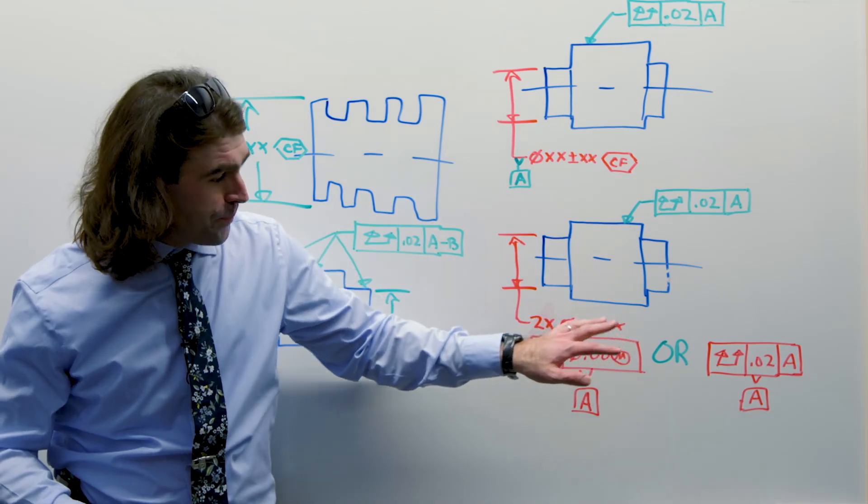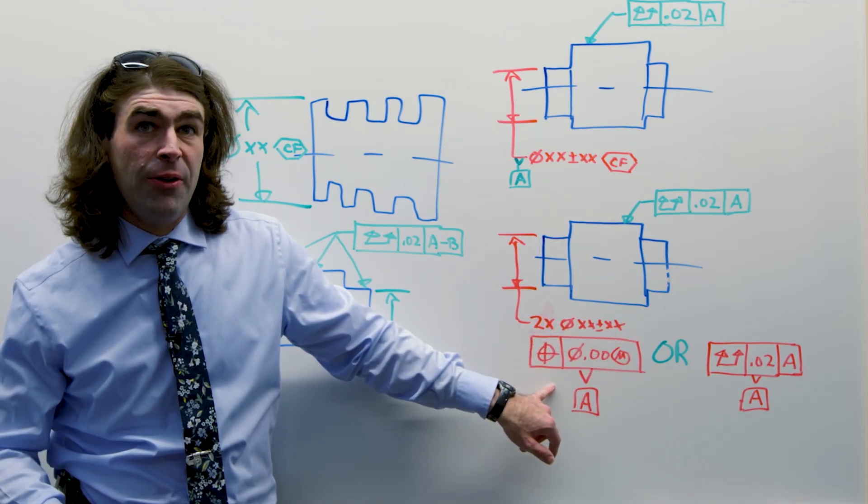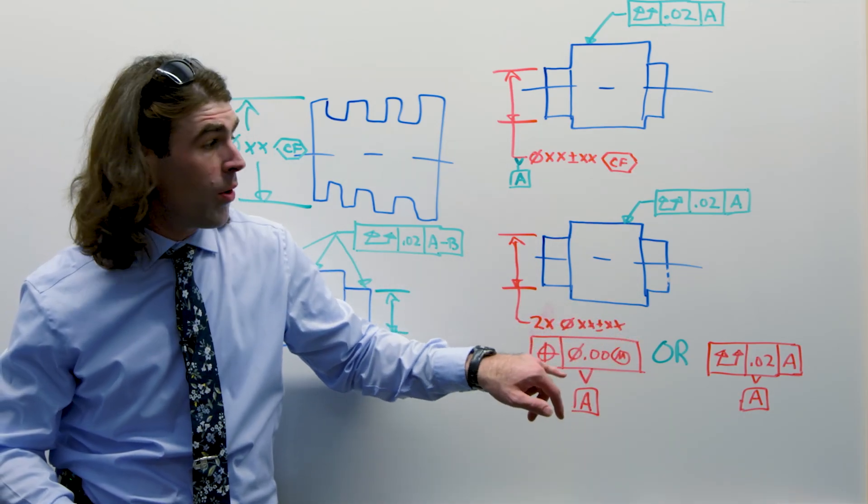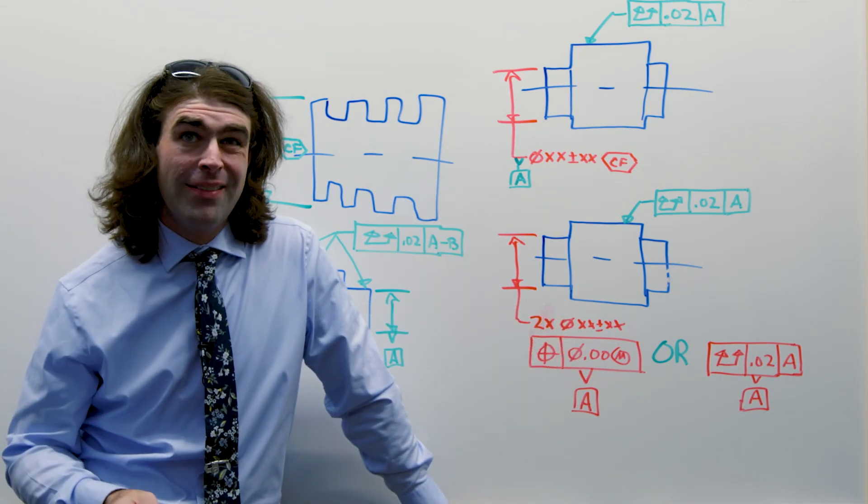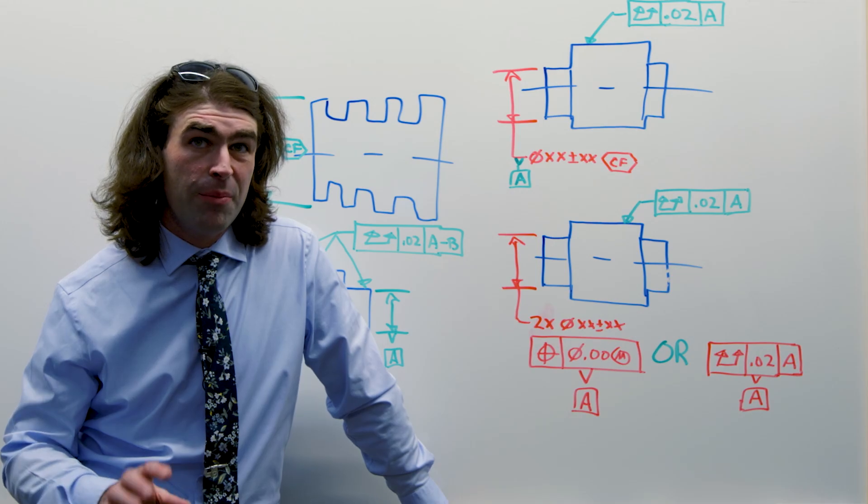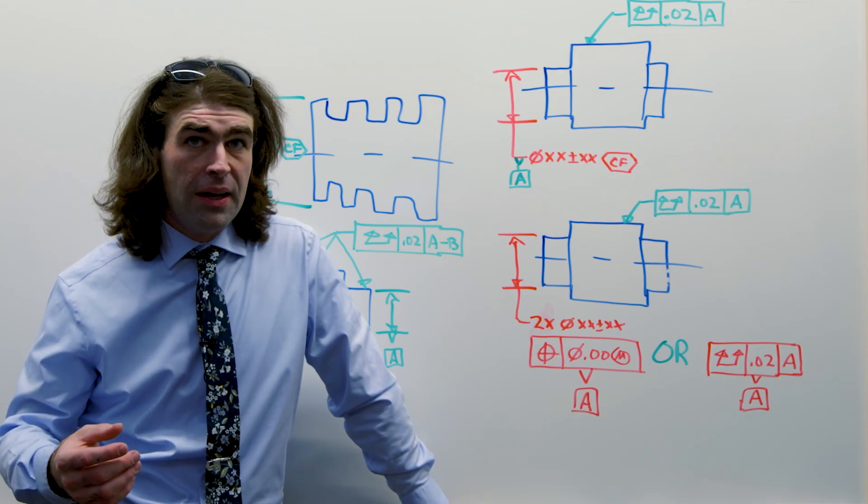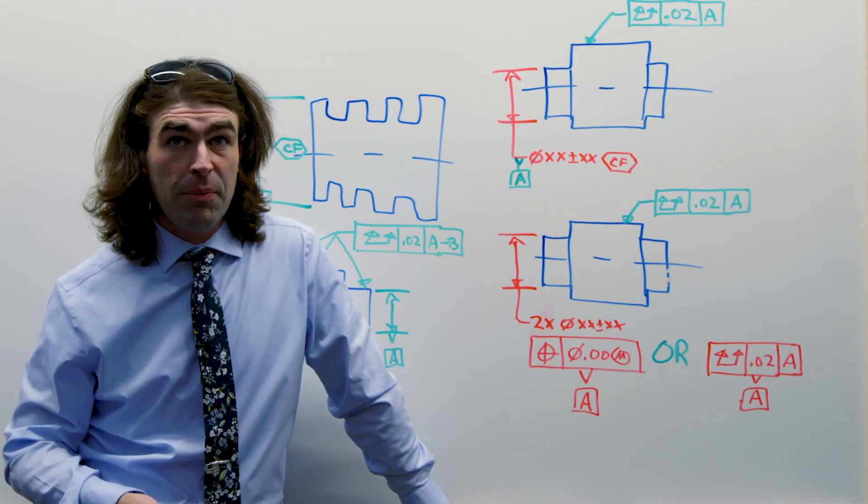Continuous feature. You can control the coaxiality with position or runout here. Maybe you could do it with profile. I think you'd really raise eyebrows with profile on a cylindrical part, even though maybe it would mean the same thing.